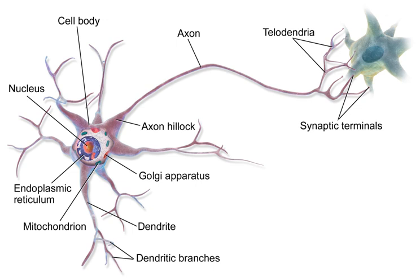They showed theoretically that networks of artificial neurons could implement logical, arithmetic, and symbolic functions. Simplified models of biological neurons were set up, now usually called perceptrons or artificial neurons. These simple models accounted for neural summation, i.e., potentials at the postsynaptic membrane will summate in the cell body. Later models also provided for excitatory and inhibitory synaptic transmission.